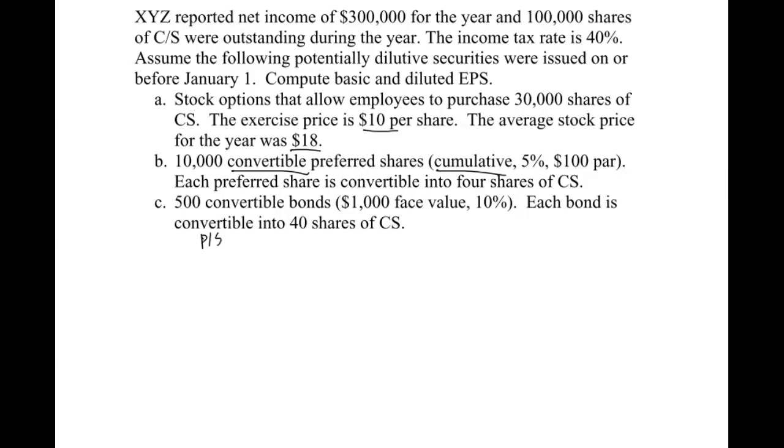So we've got preferred stock dividend. Remember, it is the total par value outstanding, which means we have to take the 10,000 shares times the $100 par per share. So that's total par value outstanding. And then we just multiply that times the percent, which is 5%.